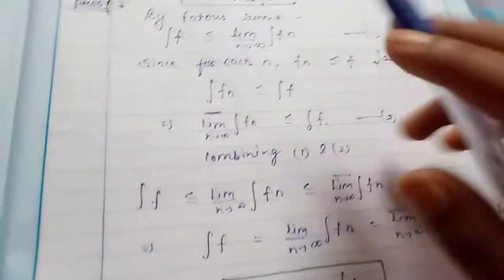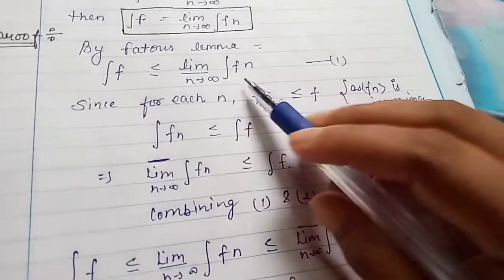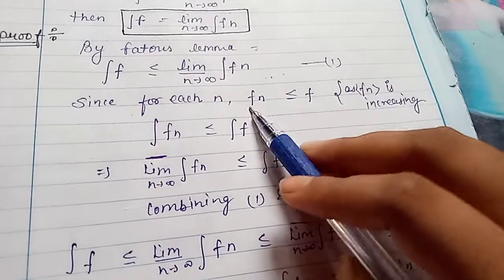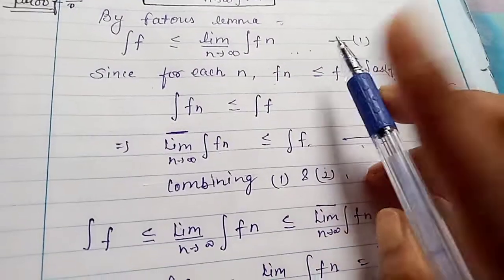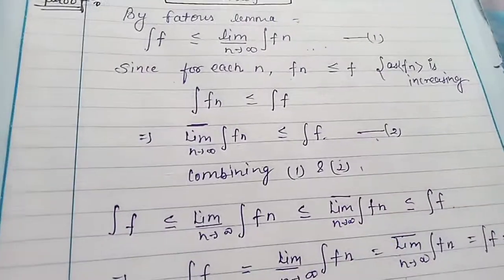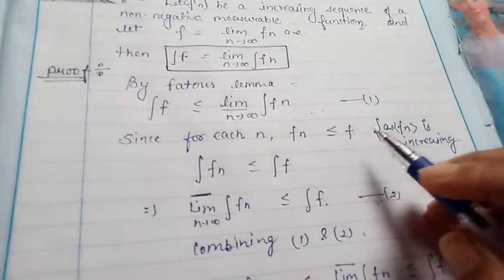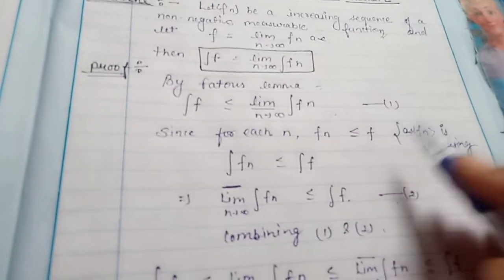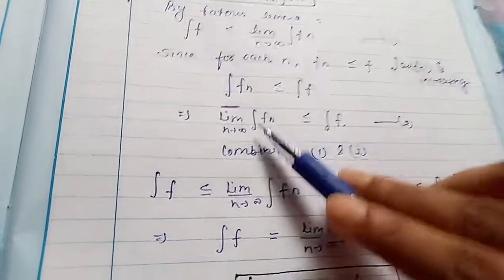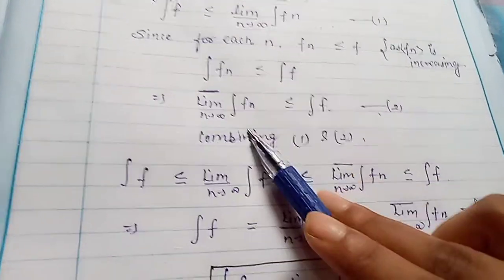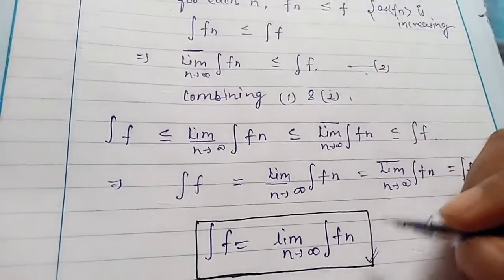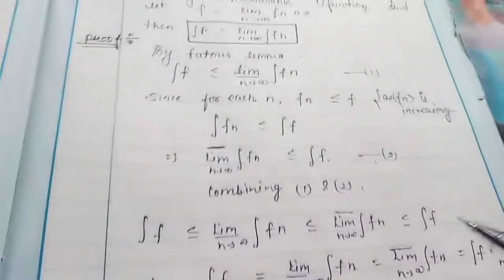So this is very simple to prove. First, you have to apply Fatou's Lemma as the first condition, and then show that fn is an increasing sequence so fn is less than or equal to f. Take the integral of both sides, take the limit superior, and combine both inequalities to get the final equation.